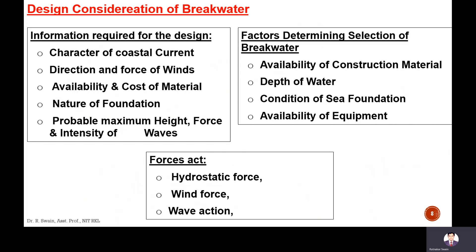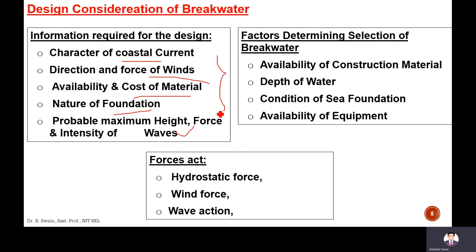Next is the design consideration for the breakwater. What information is required? What are the factors to determine the selection of breakwater? Information requirements include: the character of the coastal current, direction and force of winds, availability and cost of material, nature of foundation required, maximum height, force and intensity of waves. These pieces of information are required for the design.